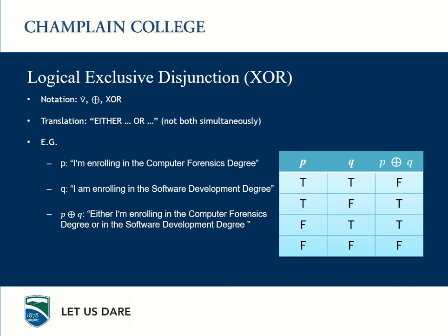XOR is TRUE if one of them is TRUE and the other is FALSE. It's FALSE in the other two cases. So if I enroll in both the Cybersecurity degree and the Software Development degree, I was lying when I said it's either one or the other. If I don't enroll in any of them, I'm also lying. The only situations where I'm not lying is if I enroll in just one of them. On the right side of the screen you can see the truth table for XOR with two propositions.